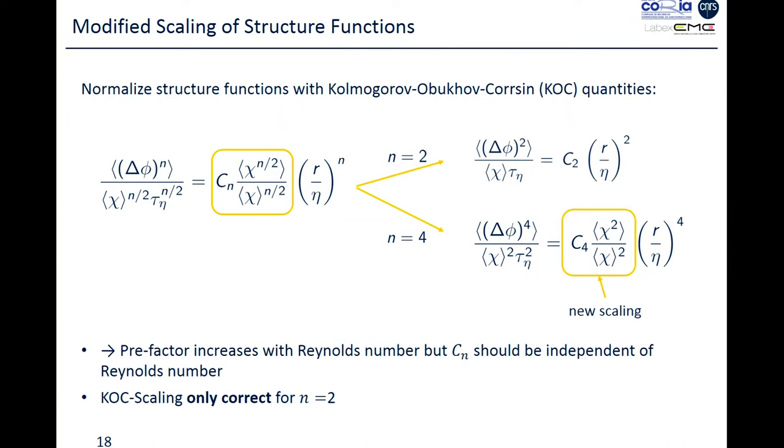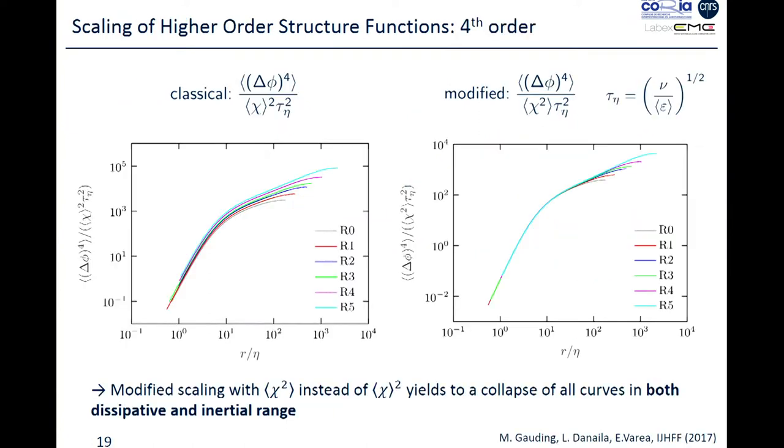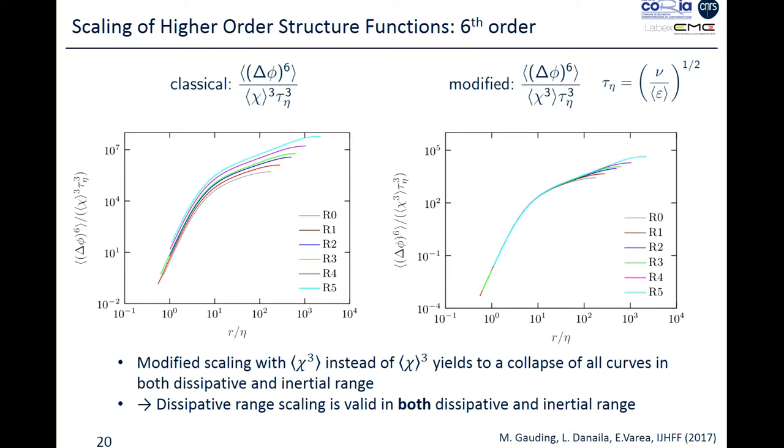For n equal to 2, this is equal to 1, so it simplifies. We go back at the second-order moment to the classical result of Kolmogorov-Obukhov-Corrsin, but at higher-order moment, we'll still have, for instance, for 4, chi-square divided by the mean value of chi squared. We show with our numerical simulations that at left, you have normalization with respect to the classical KOC, Kolmogorov-Obukhov-Corrsin, so we do not have normalization. The curves do not collapse. Whereas, when we use our modified scaling, in which we use here the square power of chi, instead of the square of the mean value of chi, we have a much better arrangement, a much better superposition and collapse of the curves.